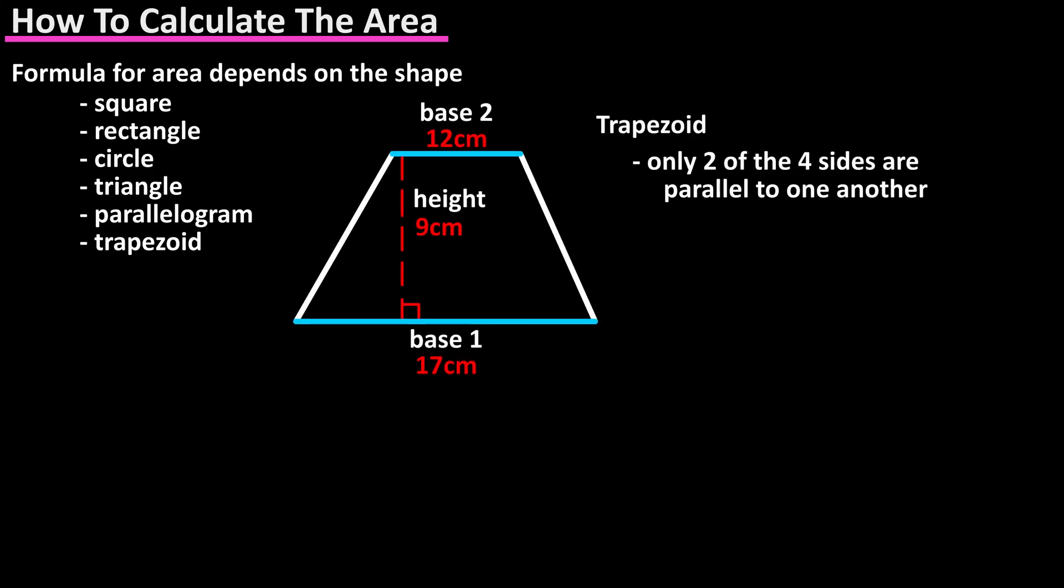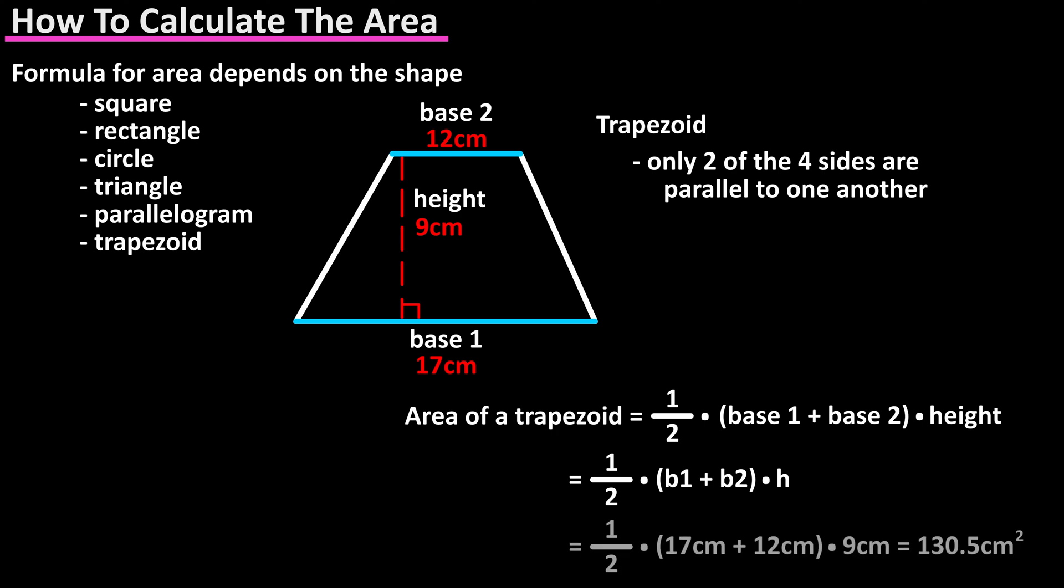The formula for the area of a trapezoid, which has four sides, with only two of them being parallel to one another, is one half times base one plus base two times the height. In this formula base one and base two are the parallel sides, and height is the perpendicular distance to the parallel sides. So h, or height, makes a right 90 degree angle with the parallel sides. From this diagram our formula is one half times 17 centimeters plus 12 centimeters times nine centimeters, which calculates out to 130.5 centimeters squared.